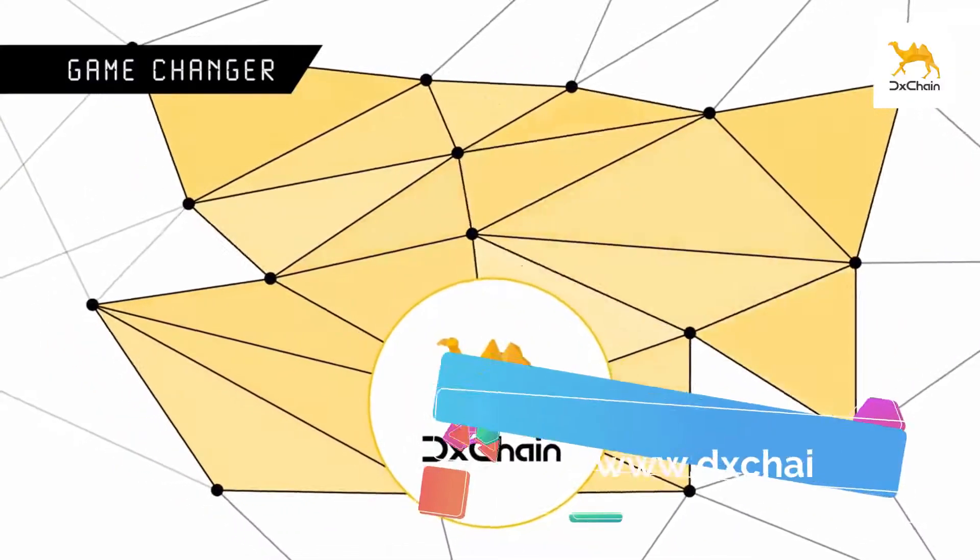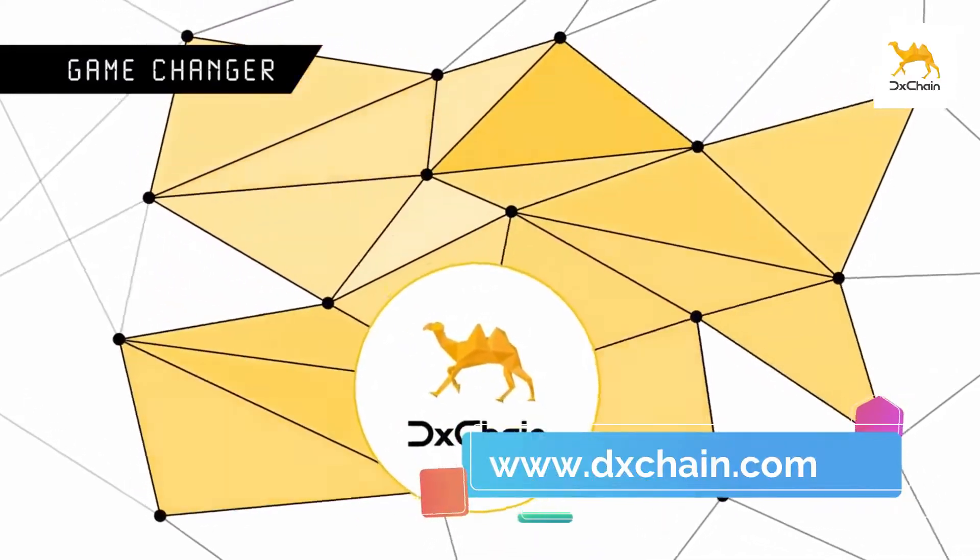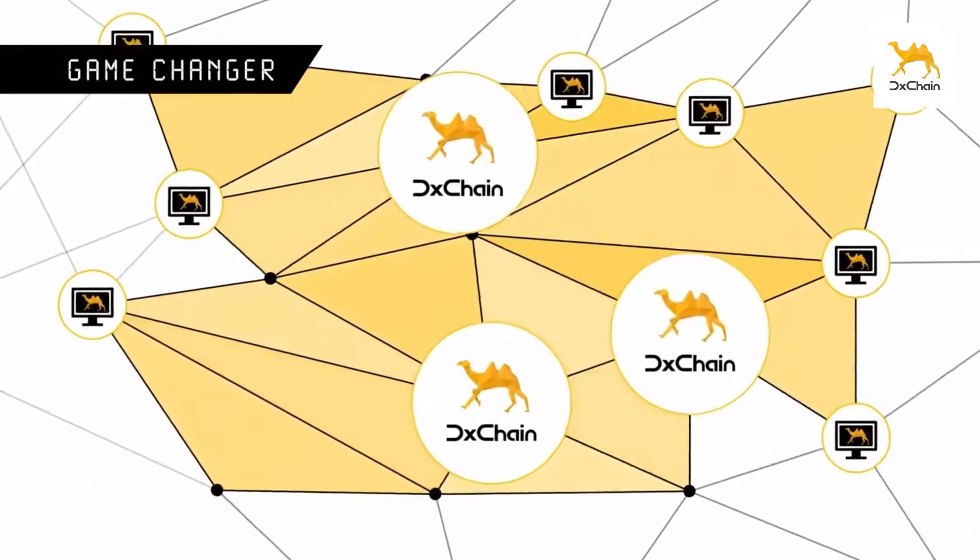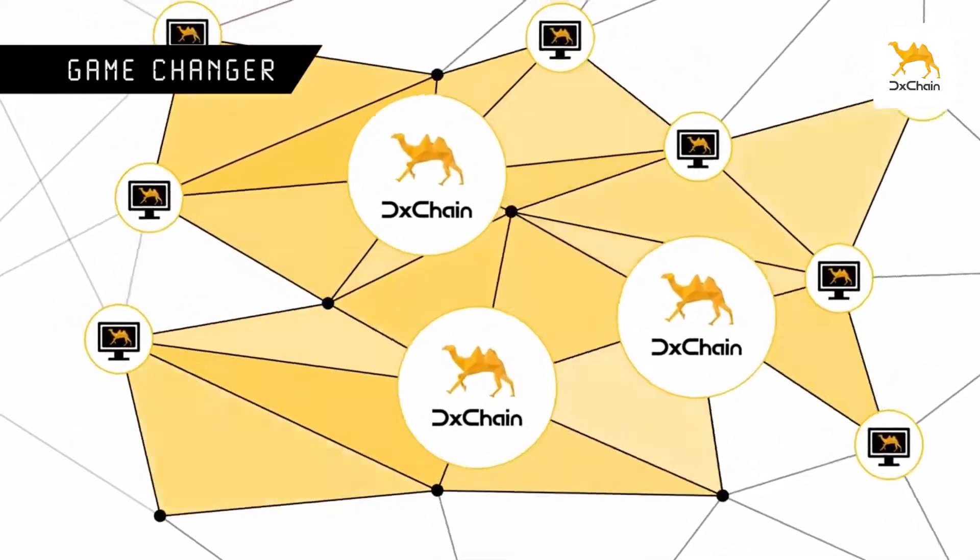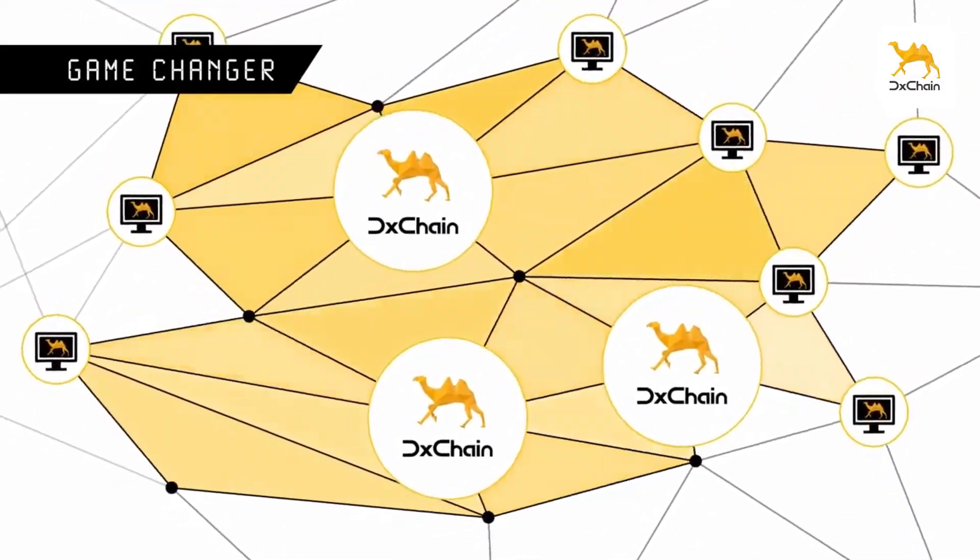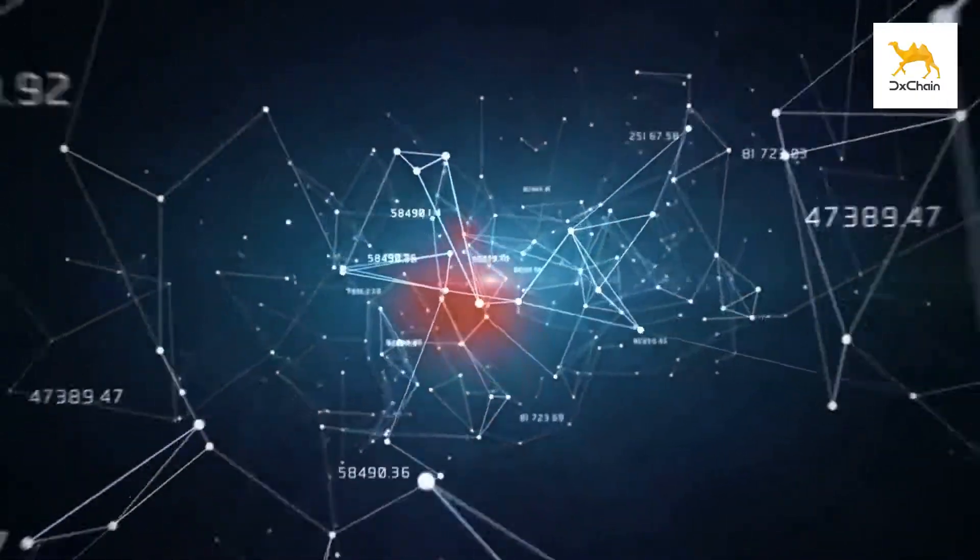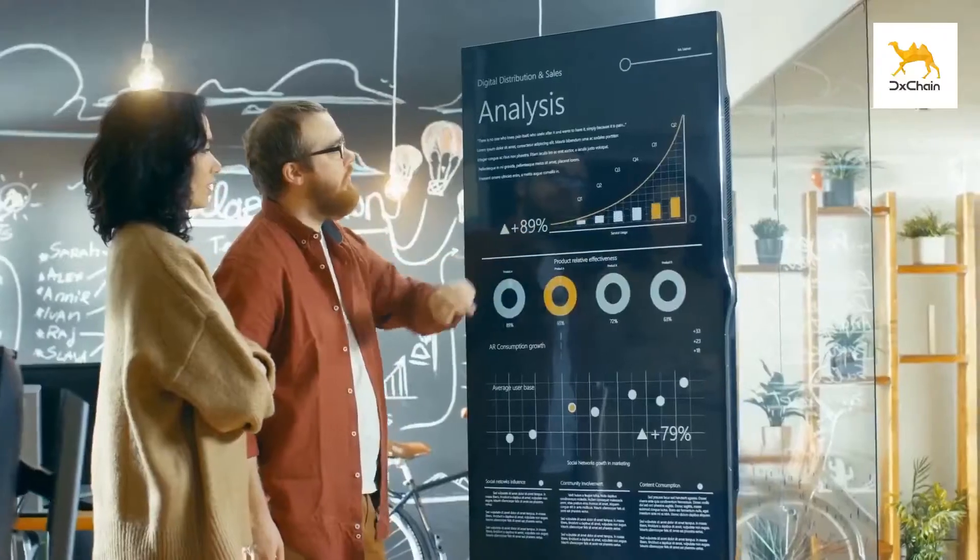The DX token is the network's native protocol token. The token will initially be issued as ERC-20 tokens after the crowdsale and will be migrated to the DX Chain mainnet after it is launched. There are several uses for the tokens.